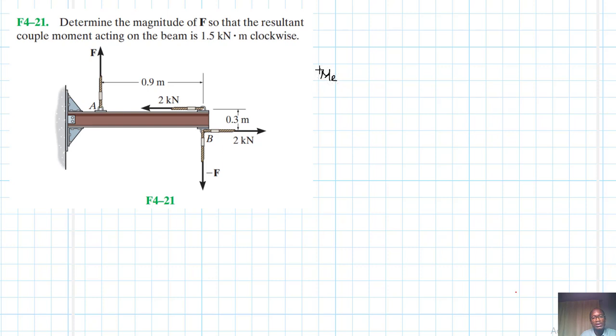We have the resultant couple moment, and clockwise mean our reference in this we've been taught is equal to minus 1500 kilonewtons. Let me just put it as 1.5 - it's negative so clockwise is our reference.